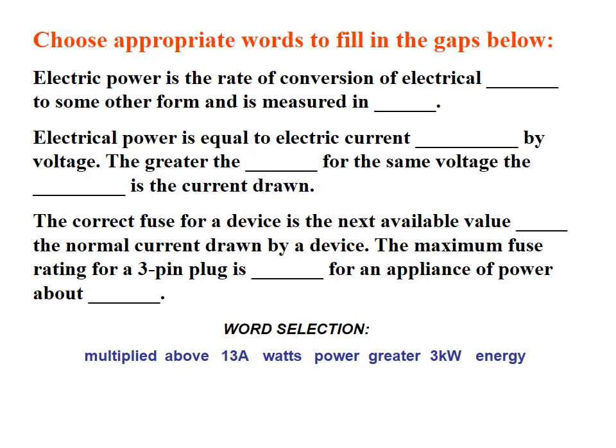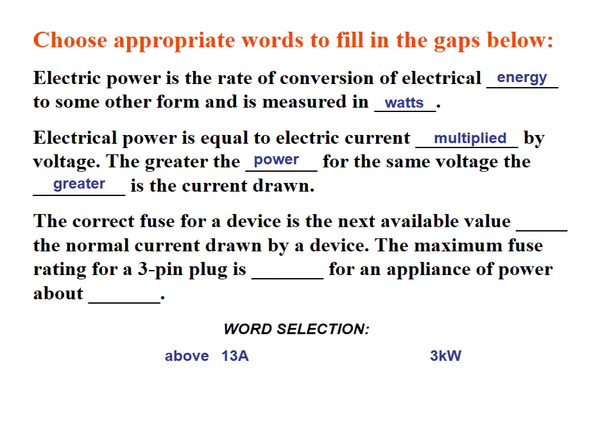Electrical power is the rate of conversion of electrical energy into some other form, and is measured in watts. Electrical power equals current multiplied by voltage. The greater the power for the same voltage, the greater the current drawn. The correct fuse for a device is the next available value above the normal current drawn. The maximum fuse rating for a 3-pin plug is 13 amps, for an appliance of about 3 kilowatts.